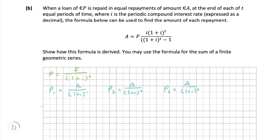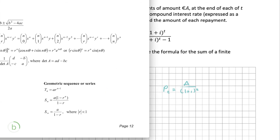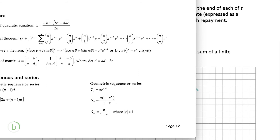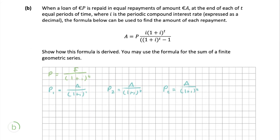When the present values of each individual repayment are all added together, they should equal the total amount p needed to be repaid. Going back to our log tables, there is the sum formula for a geometric sequence: S_n = a(1 − r^n) all over (1 − r). We can use this formula to find the total value of p by adding every single term all the way down to the t-th term.